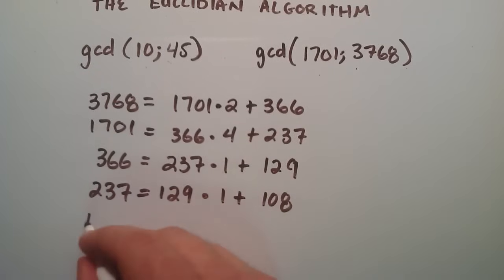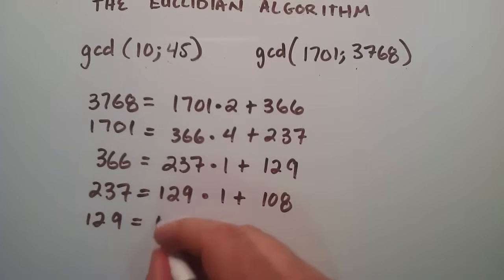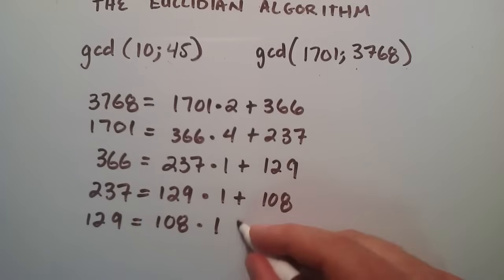Moving the 129 to the left hand side now. And the 108 to where the 129 was. 108 goes into 129 one time, with a remainder of 21.